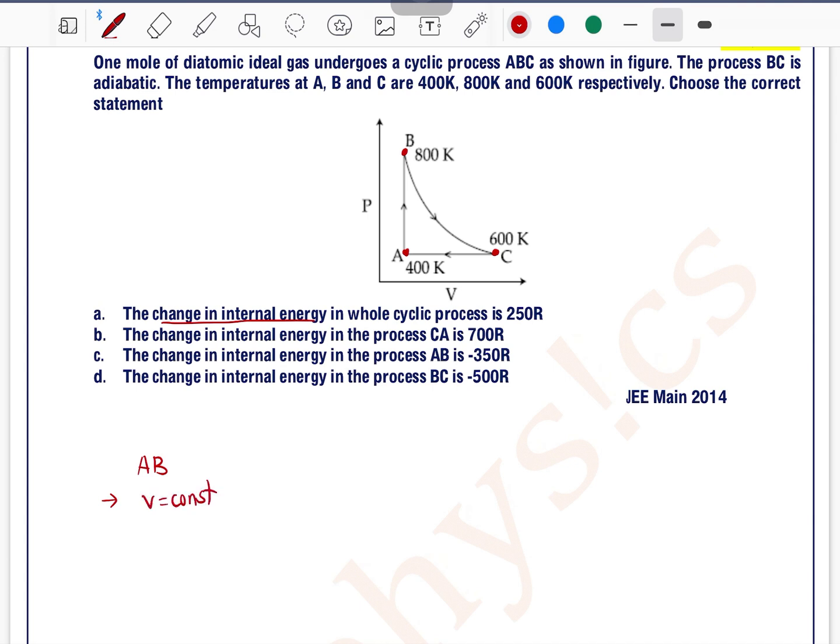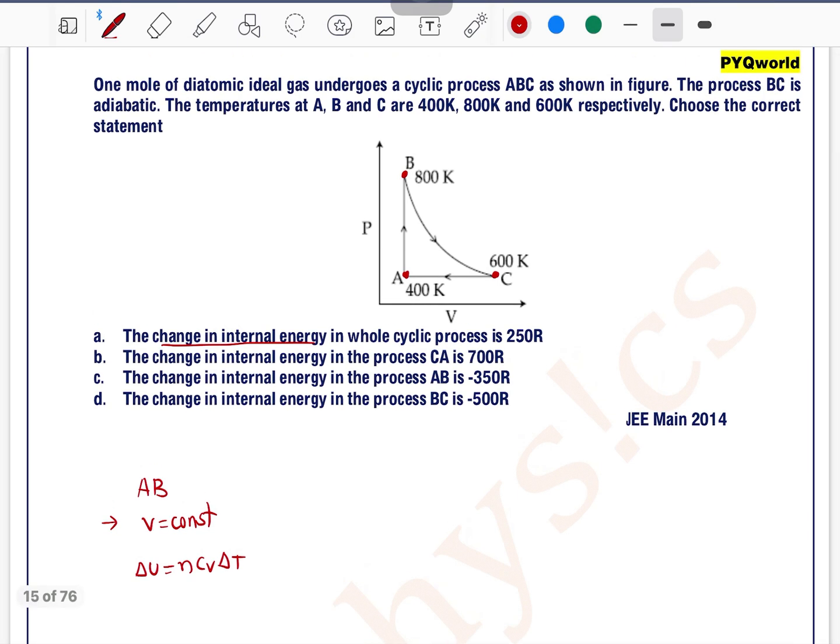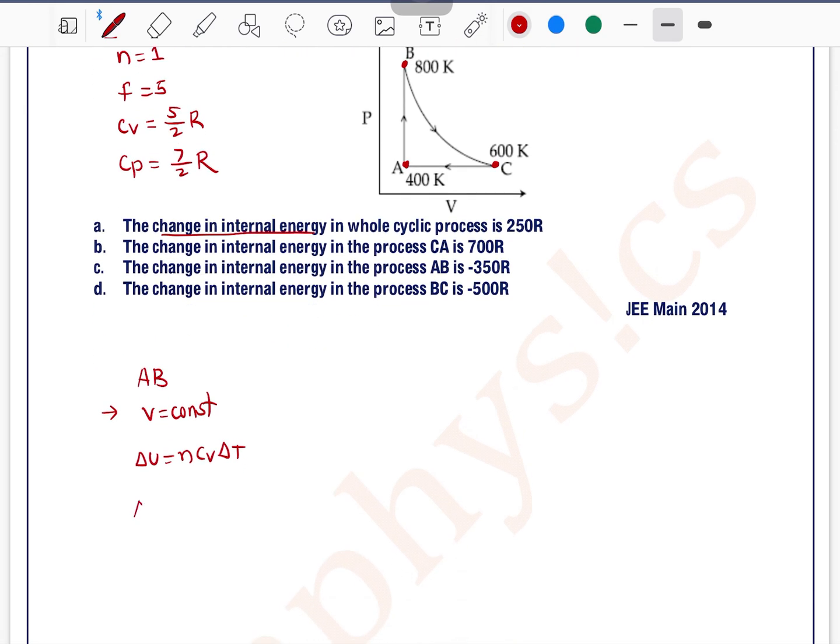Process AB is which type of process? Volume is constant, meaning isochoric process. In case of isochoric process, delta U equals n Cv delta T. First we will find Cv. One mole of diatomic gas means n equals 1, diatomic gas means degree of freedom is 5. So Cv equals F by 2 R, meaning 5 by 2 R, and Cp equals Cv plus R, meaning 7 by 2 R.